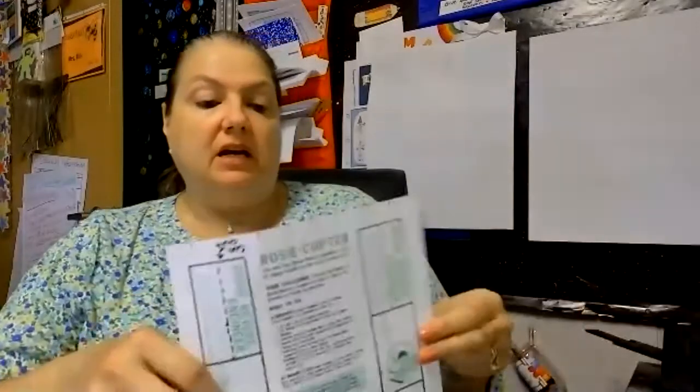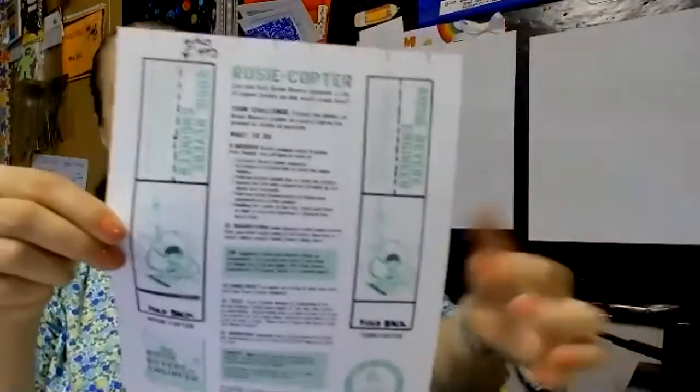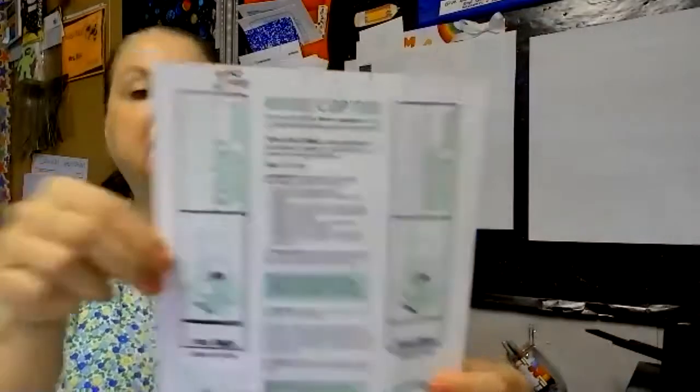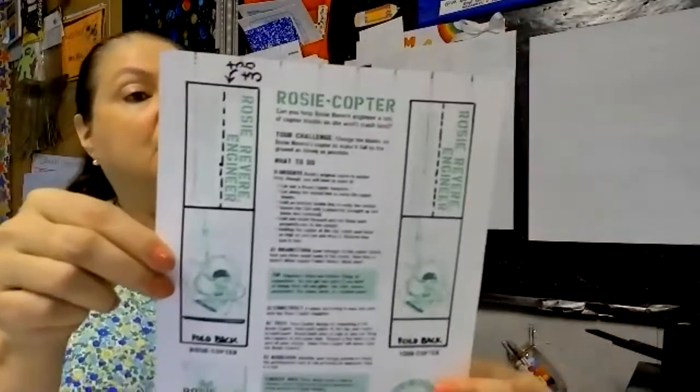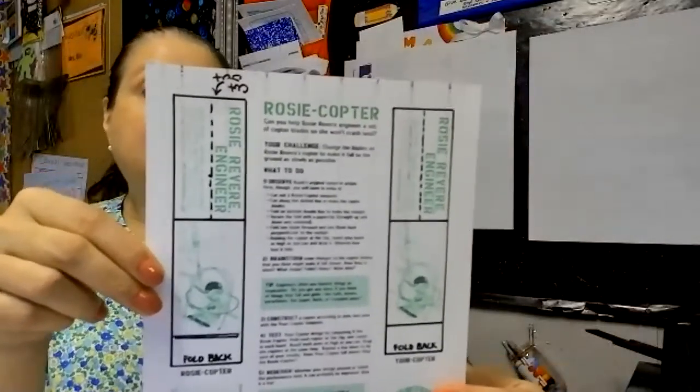So in order to show that example, in your packet for STEM night, you'll have a page that looks like this. I highlighted mine in dark marker so that I can see it better on the screen. But it is a Rosie copter. And what your job is, can you help Rosie Revere engineer a set of copter blades so she won't crash land? This is your challenge.